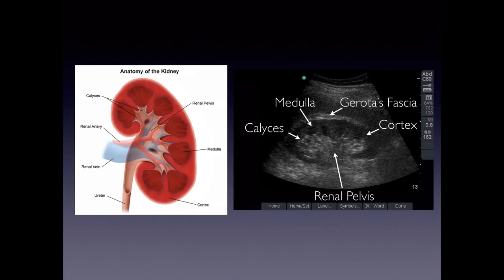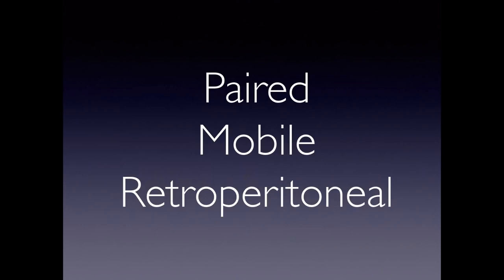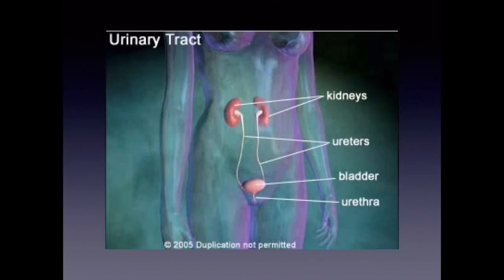The kidneys are paired, mobile, and retroperitoneal organs. The kidneys, ureters, and bladder form a closed system. So if a patient has acute urinary retention, you're going to see hydronephrosis, and this doesn't necessarily mean there's a stone. Just keep that in mind.